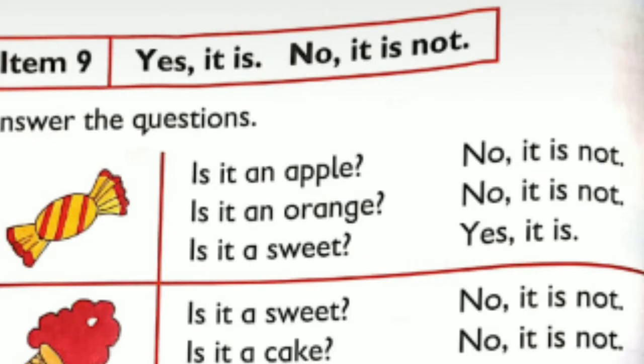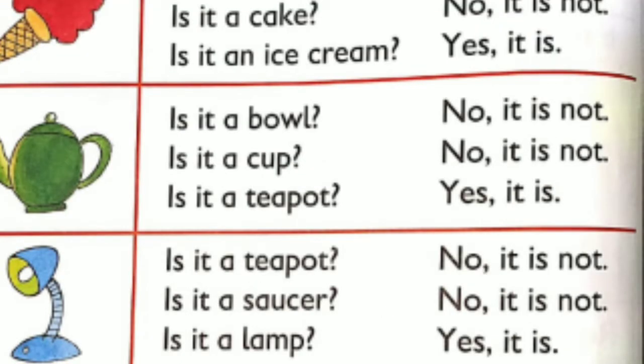Item 9 — Yes, it is. No, it is not. Is it an apple? No, it is not. Is it an orange? No, it is not. Is it a sweet? Yes, it is. Is it a sweet? No, it is not. Is it a cake? No, it is not. Is it an ice cream? Yes, it is. Is it a bowl? No, it is not. Is it a cup? No, it is not. Is it a teapot? No, it is not. Is it a saucer? No, it is not. Is it a lamp? Yes, it is.